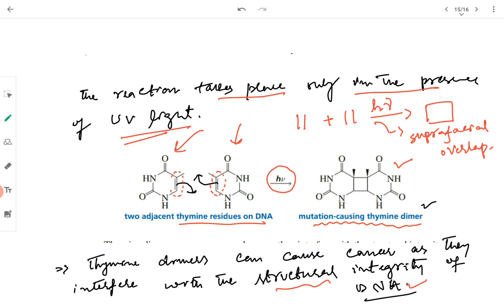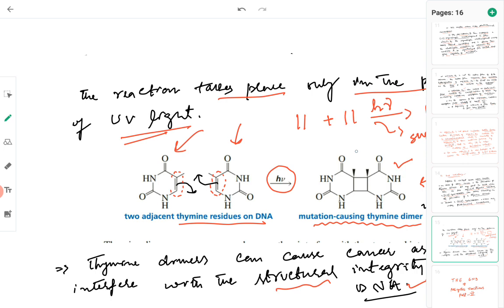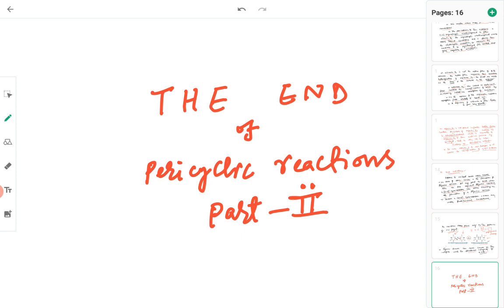Modified DNA leads to deformed proteins and different diseases. Fortunately, human beings are protected by certain enzymes that correct mutations in the DNA by converting the thymine dimer back into thymine residues. In some organisms where those enzymes are not present, such mutations can lead to skin cancer and many other genetic disorders. This concludes the three biological pericyclic reactions and the second part of pericyclic reactions — next we will be starting with photochemistry.